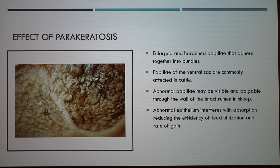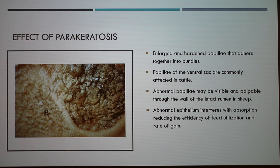The effects of paracarotosis: many of the papillae are enlarged and hardened, and several may clump together to form bundles, as seen in the photo. The papillae of the anterior ventral sac are commonly affected. In cattle, the roof of the dorsal sac may show multiple foci, each about 2 to 3 cm², of paracarotosis. In sheep, abnormal papillae may be visible and palpable through the wall of the intact rumen. Affected papillae contain excessive layers of keratinized epithelial cells, particles of food, and bacteria, which may interfere with absorption and reduce feed utilization and rate of gain.